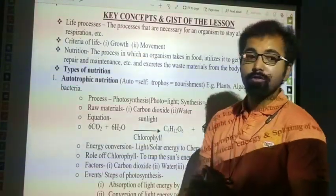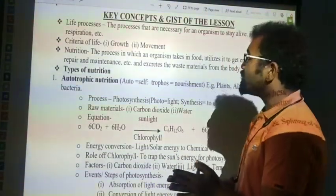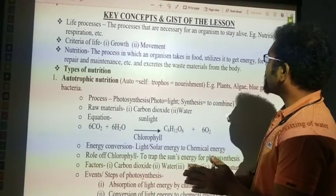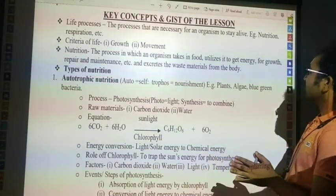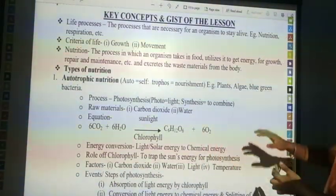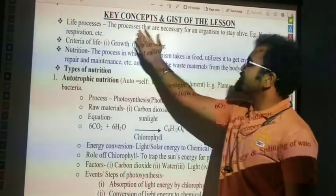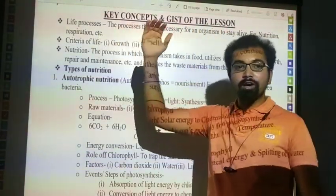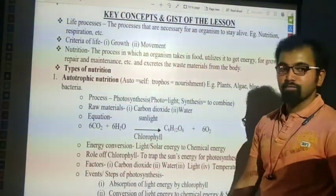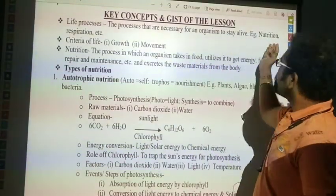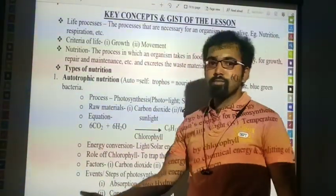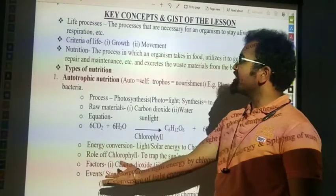These are some key points of a life process. What is a life process? The processes that are necessary for an organism to stay alive. For example, nutrition and respiration are required for a life process, because those two are the more important processes which organisms very much need.